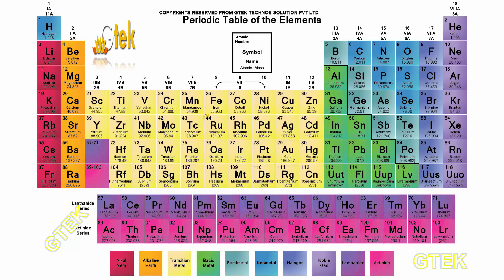For each element, you have the symbol in the center with the name at the bottom, the atomic mass at the bottom-most position, and on the left top corner you have the atomic number. This is how the indication is shown.